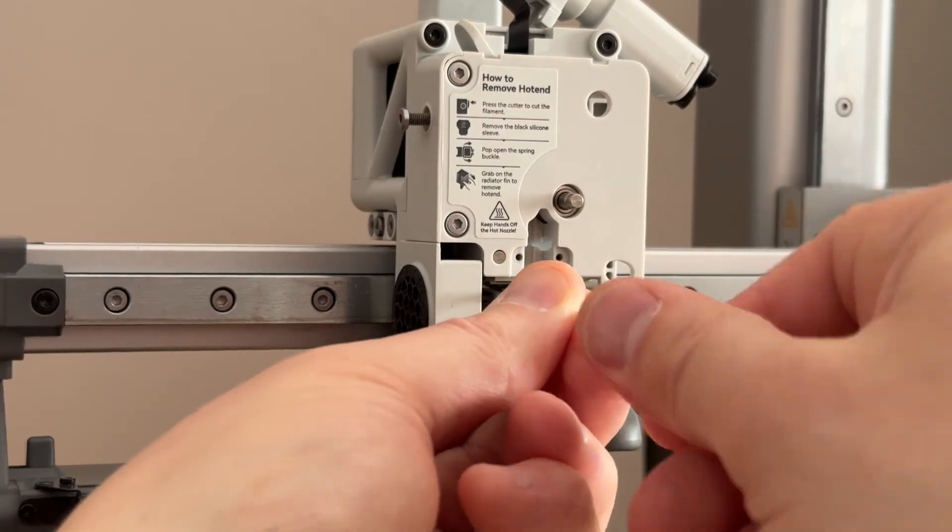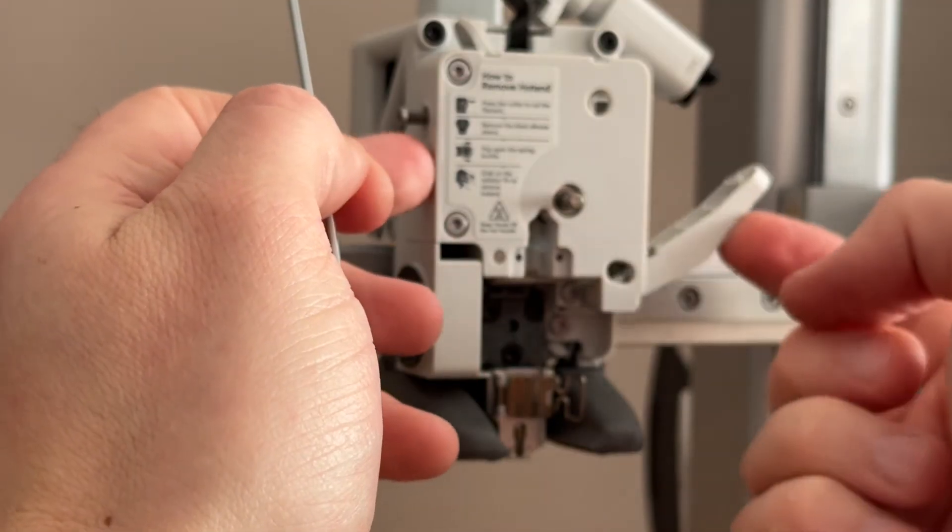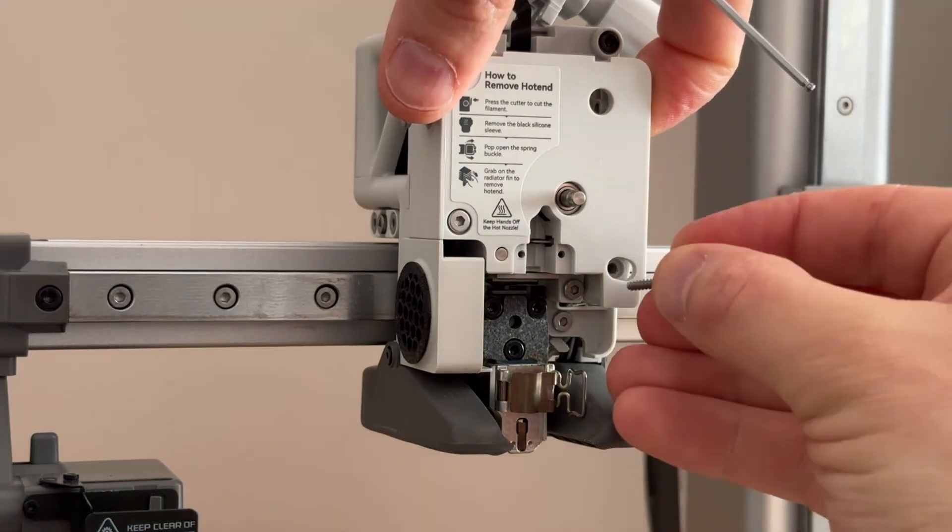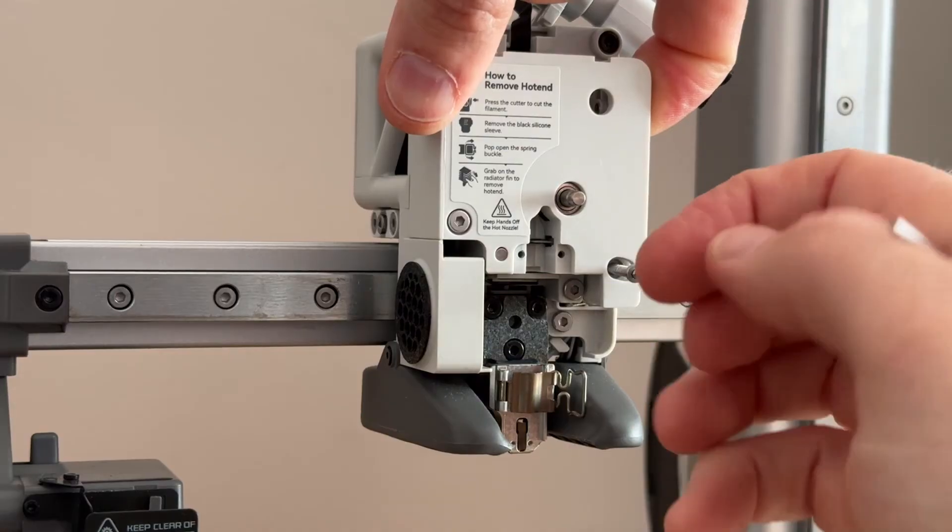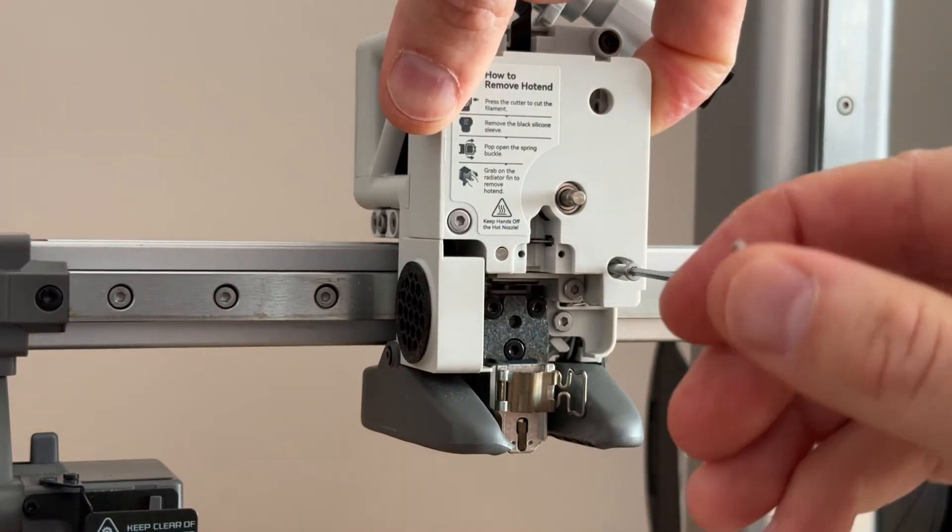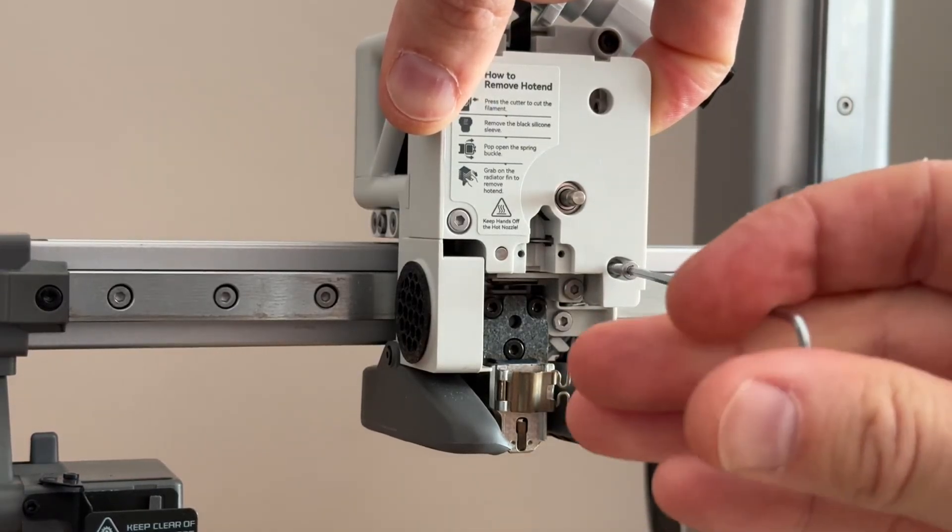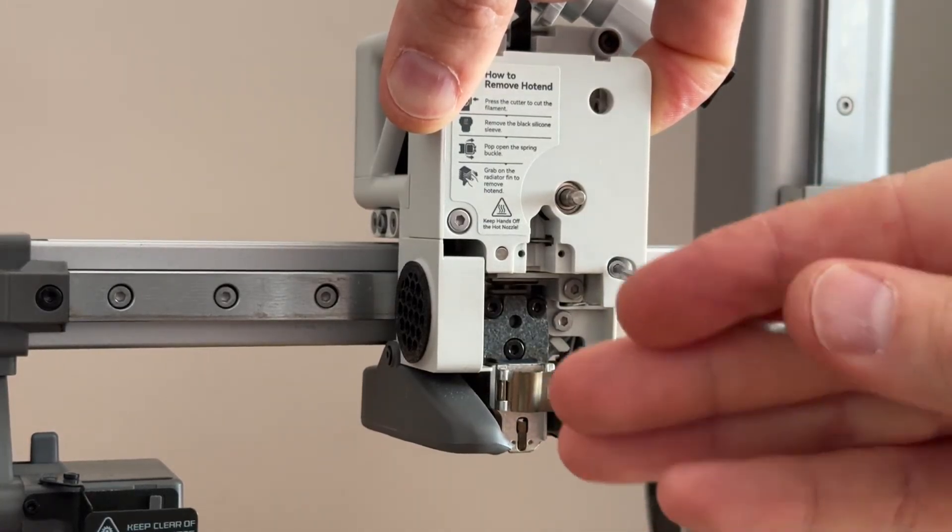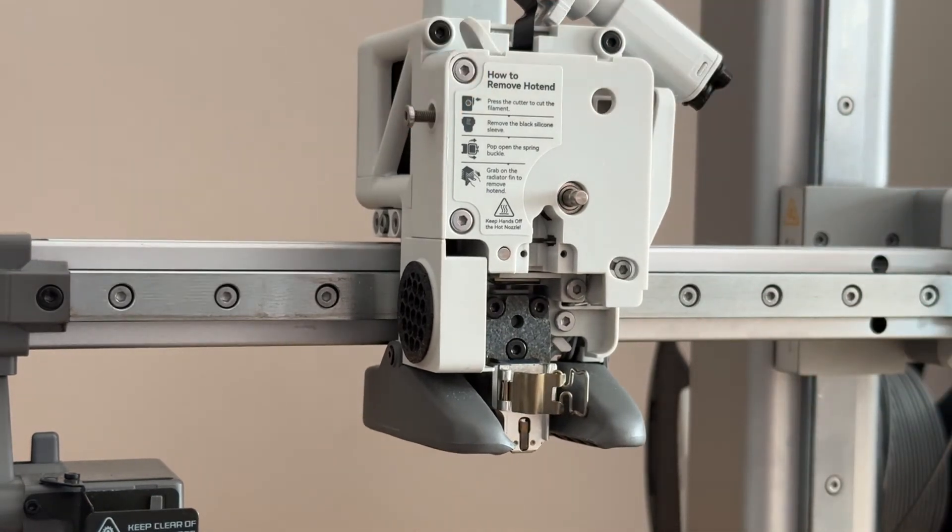Once all these are back in, we're going to put the cutter arm back in. So flip this up and in, and it should slide straight into place. Hold the lever in, install the long screw, tighten it up and let the arm go.